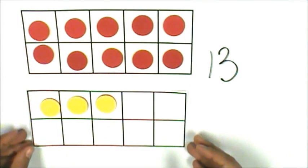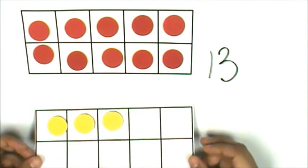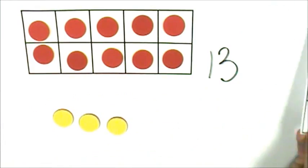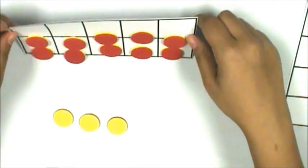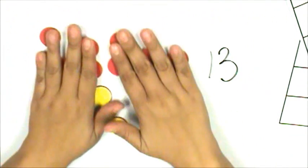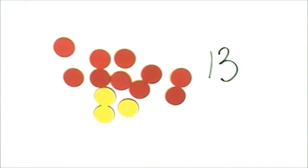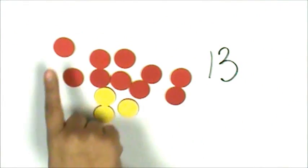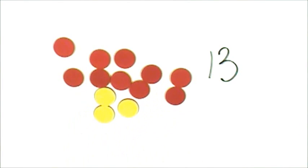Let's move the counters off of the 10 frame and mix them up. There are still 13 counters in the set because I did not take any counters away or join any more counters.